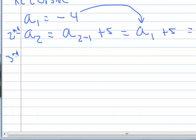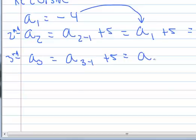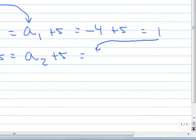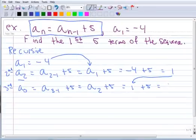Let's find our third term, a sub 3. That would be a sub 3 minus 1, and then plus 5. Simplified, 3 minus 1 is 2, plus 5. And a sub 2, well that's this term right here, the previous term. So that's 1 plus 5 equals 6.